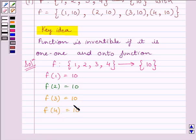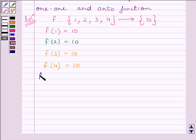So it is a many-one function since all the elements of the set {1, 2, 3, 4} have the same image. So we can write F is a many-one function.